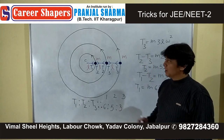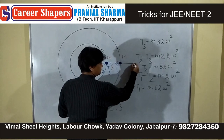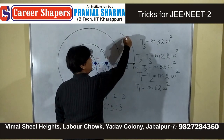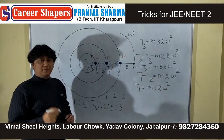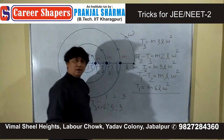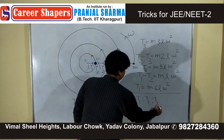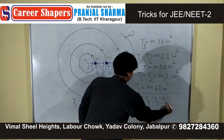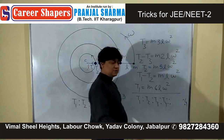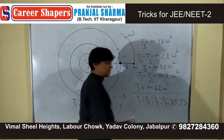Suppose they attach a fourth block with the same length l, same mass m, also moving in a circle with the same angular velocity omega. To find T1 : T2 : T3 : T4, start with 4: then 4 plus 3 is 7, 7 plus 2 is 9, 9 plus 1 is 10. The answer is 10 : 9 : 7 : 4.